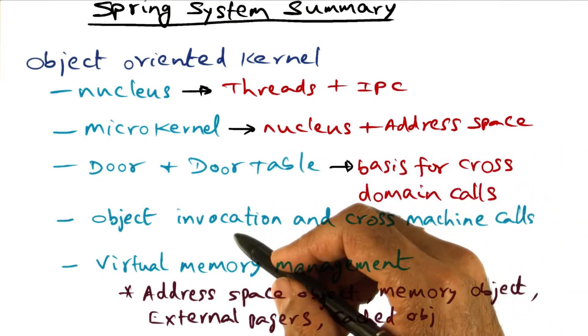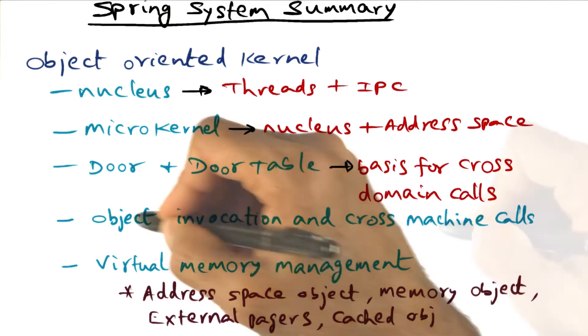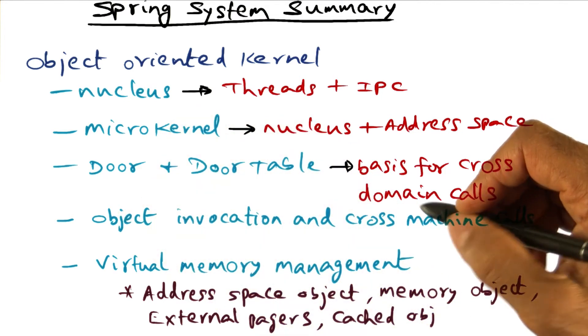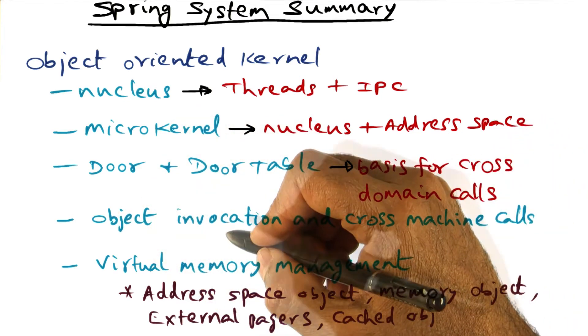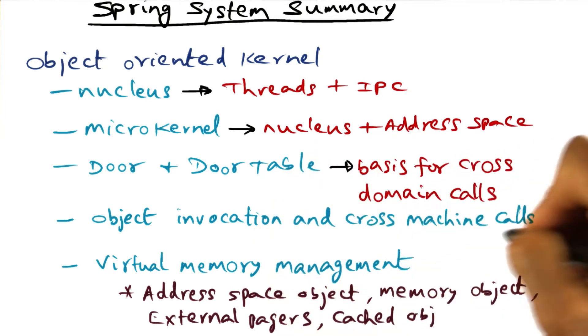And through the object orientation and through the network proxies, you can have object invocation implemented as protected procedure call both on the same node and across machines.